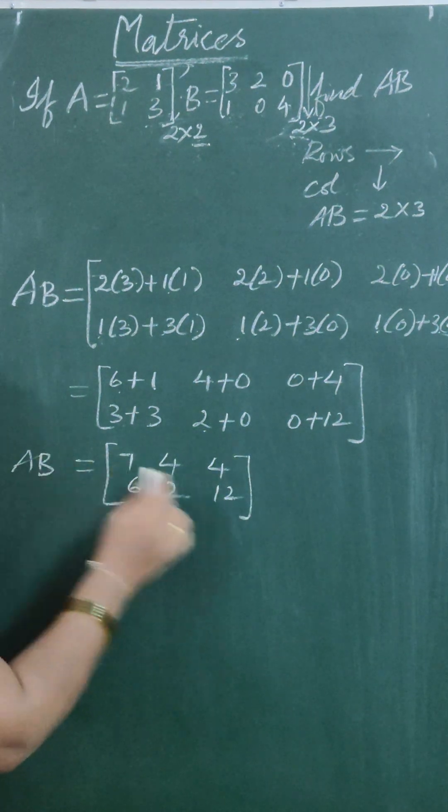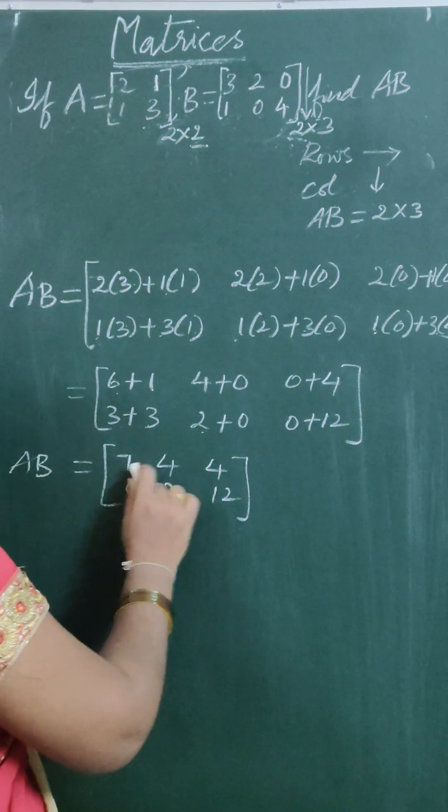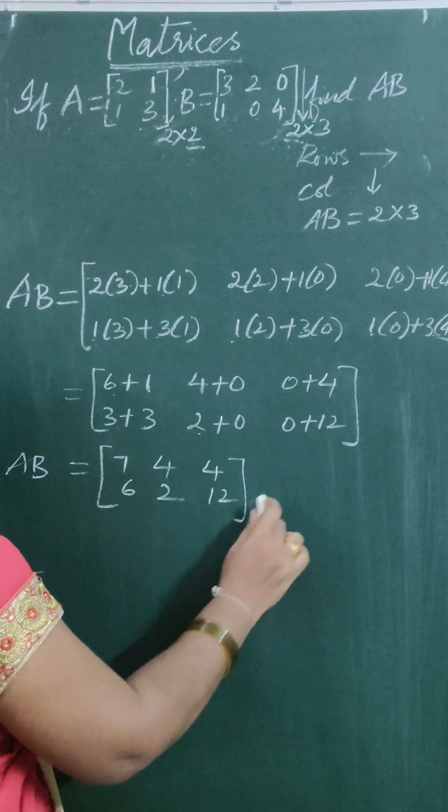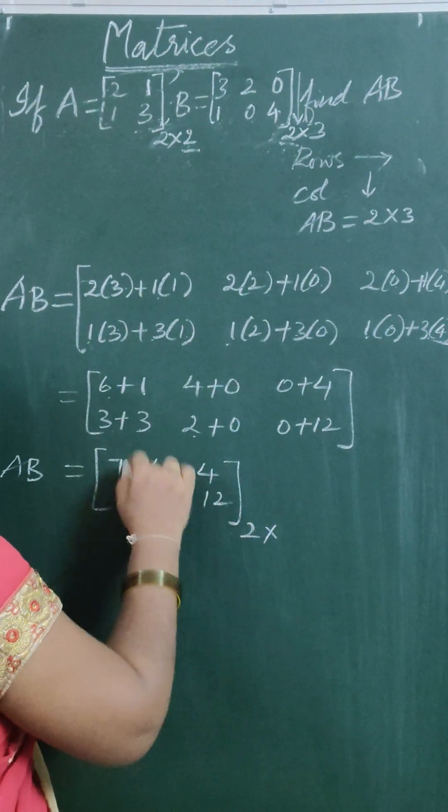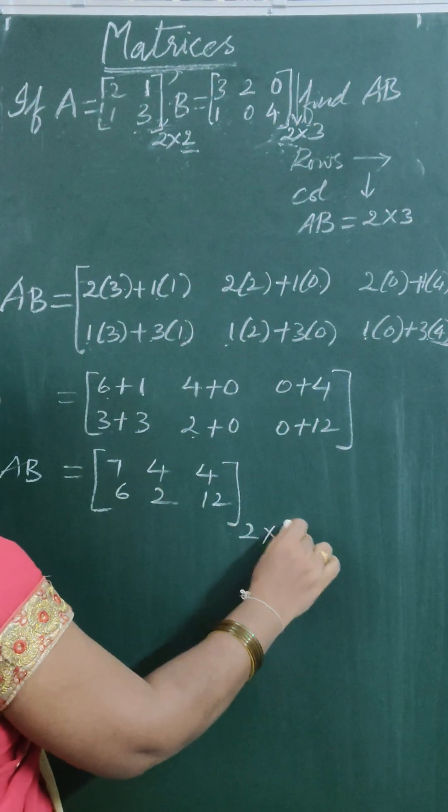Here, the order of the resultant matrix is equal to number of rows equal to 2 by number of columns 3.